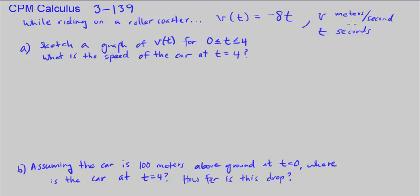Part A: sketch the graph of v(t) for 0 to 4 seconds. What is the speed of the car at t equals 4? So let's go ahead and graph this.